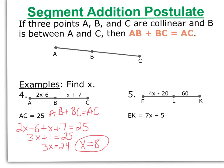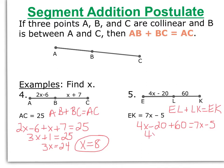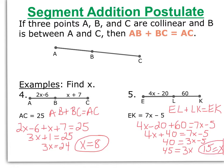Same idea for number 5 — if you want, hit pause and try this one on your own, then check your answer. Here we can say line segment EL plus segment LK will give us the whole line segment EK. So 4x minus 20 plus 60 equals 7x minus 5. Now we have an equation with variables on both sides. Combining like terms, I subtract 4x and add 5. Dividing by 3, I get x equals 15.